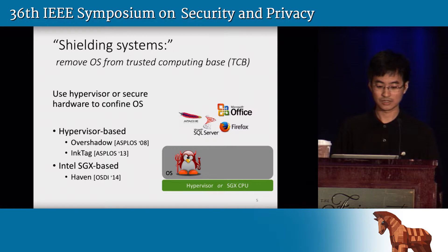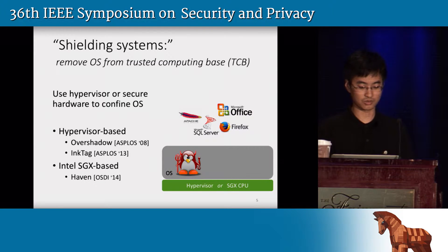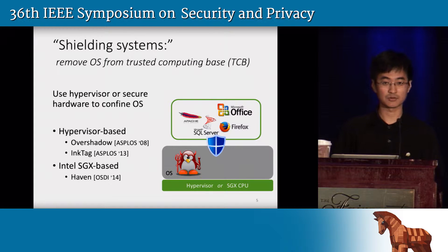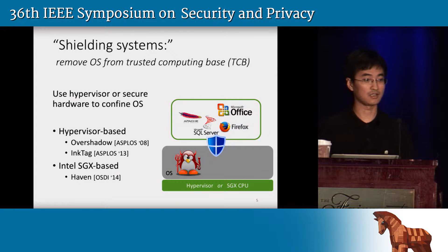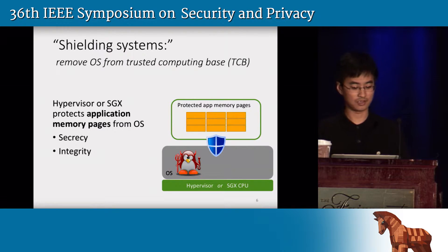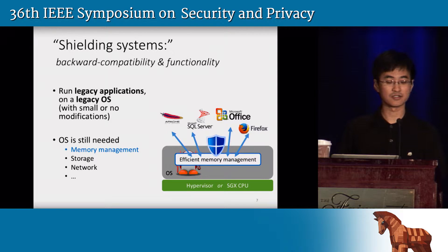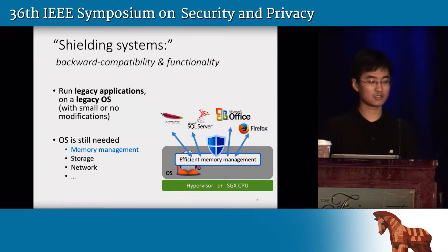In order to solve these problems, researchers have proposed several systems to remove the operating system from the trusted computing base. We use the term shielding system to refer to these types of systems. They typically use a hypervisor or some secure hardware to confine the OS such that applications are shielded from the potentially malicious operating system. For example, Overshadow and InkTag are hypervisor-based shielding systems, while Haven is a relatively new system based on Intel SGX. SGX is a new security feature proposed by Intel for its future CPUs.